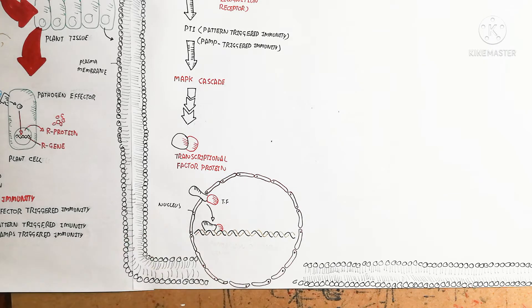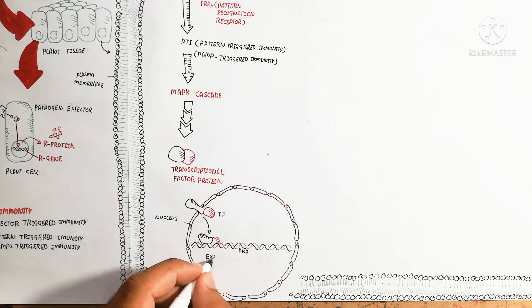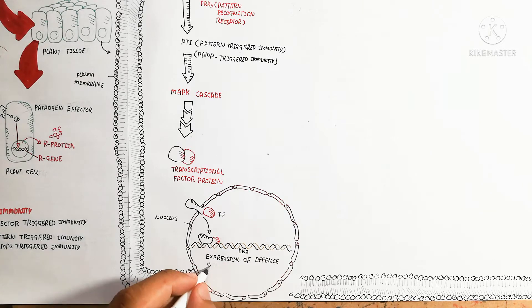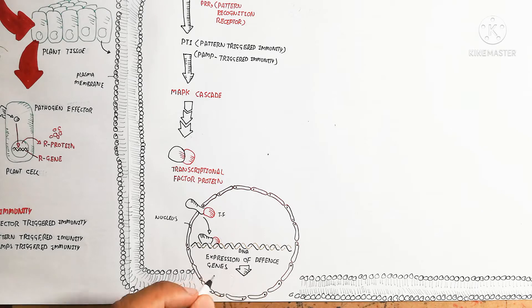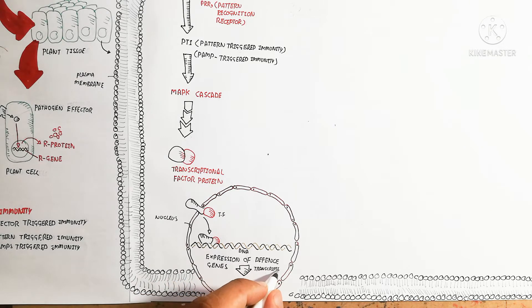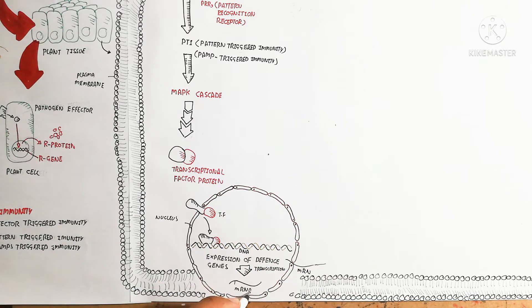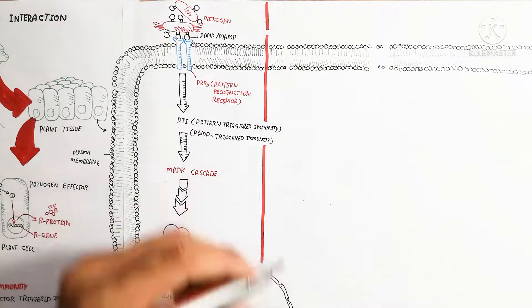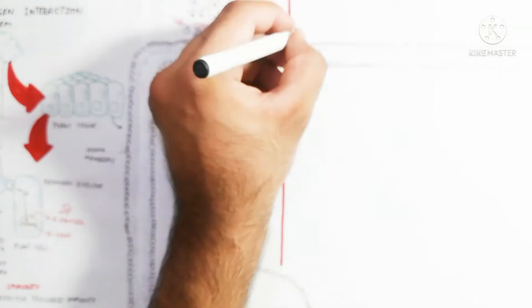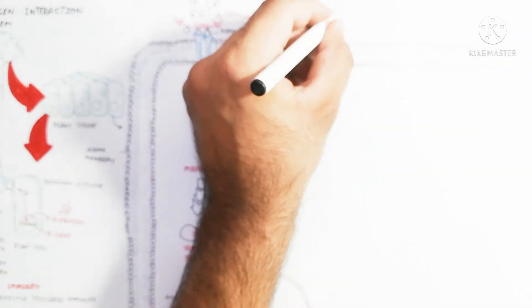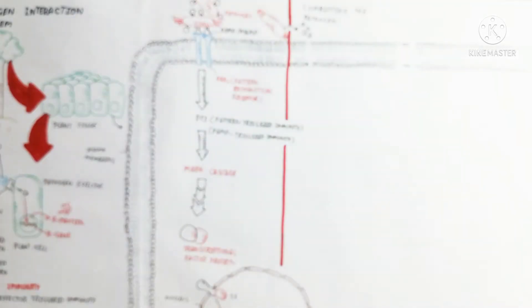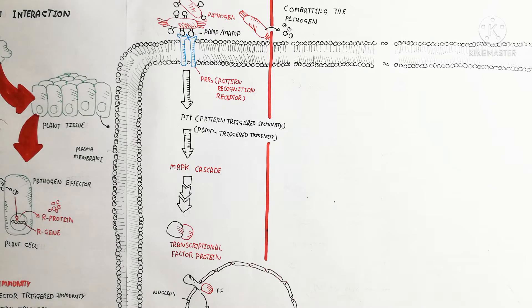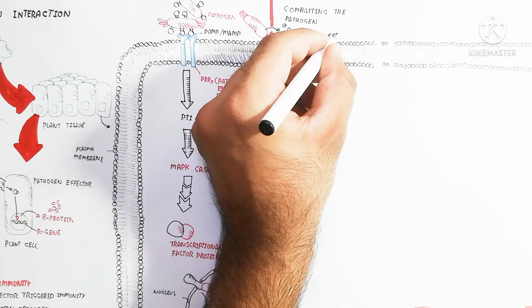The transcriptional factor protein formed by the MAPK mechanism moves into the nucleus via a nuclear pore. It binds with the DNA, and DNA helicase and DNA polymerase are used to produce messenger RNA — the expression of the defense gene. This mRNA goes out and produces resistance protein.